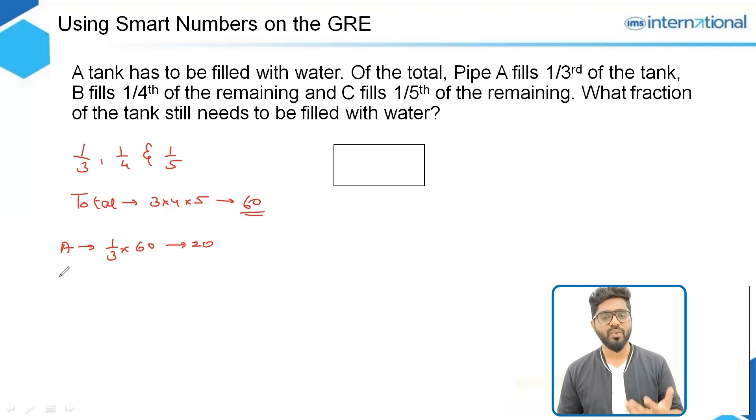So A equals 20. The remaining part that still needs to be filled with water is 60 minus 20, which equals 40. Of this, B fills 1/4. So 1/4 of 40 equals 10. Now this is very simple. The remaining part of the tank that still needs to be filled with water would be 40 minus 10, which is 30.